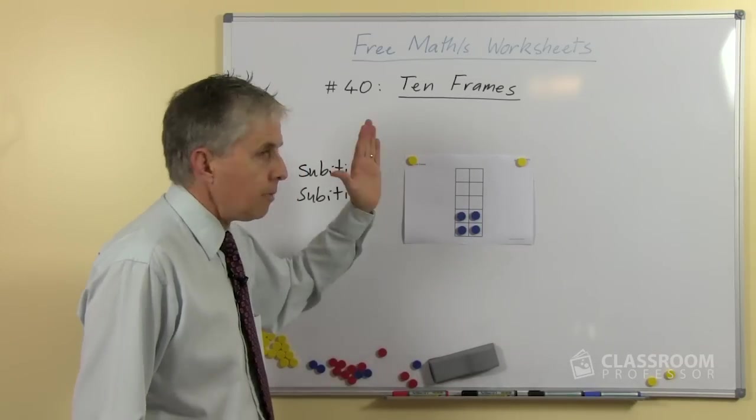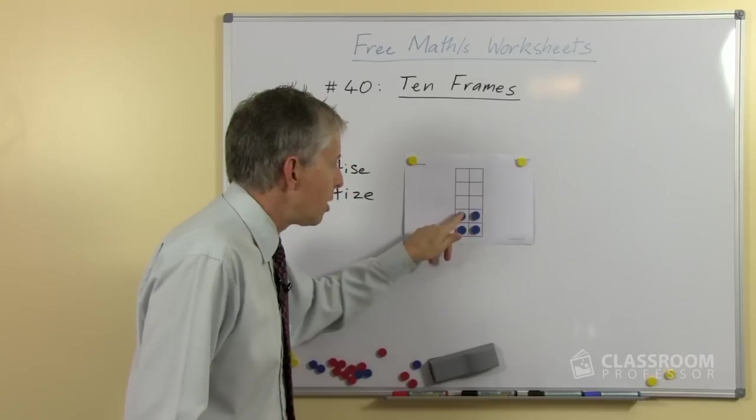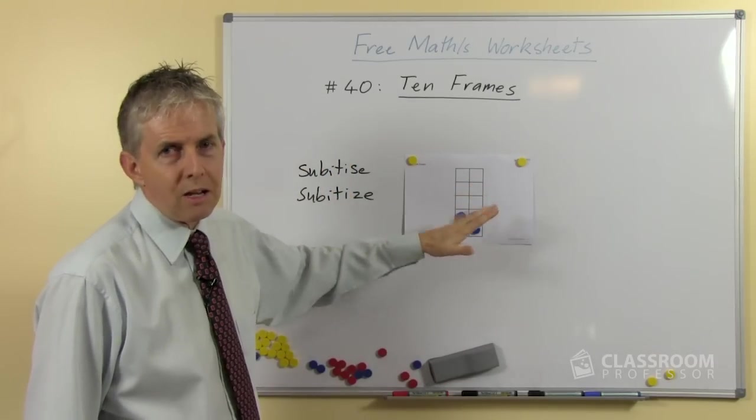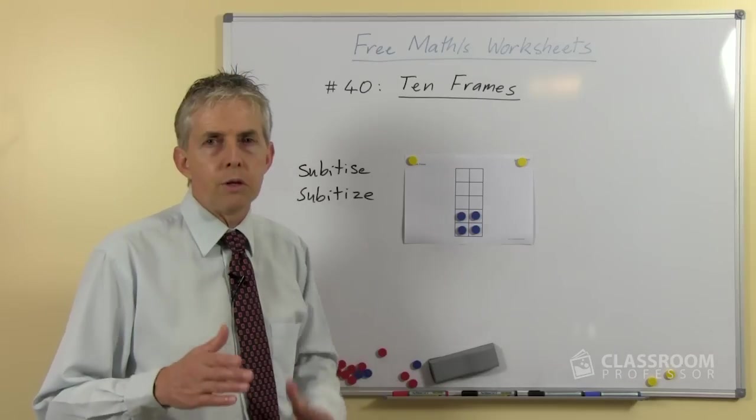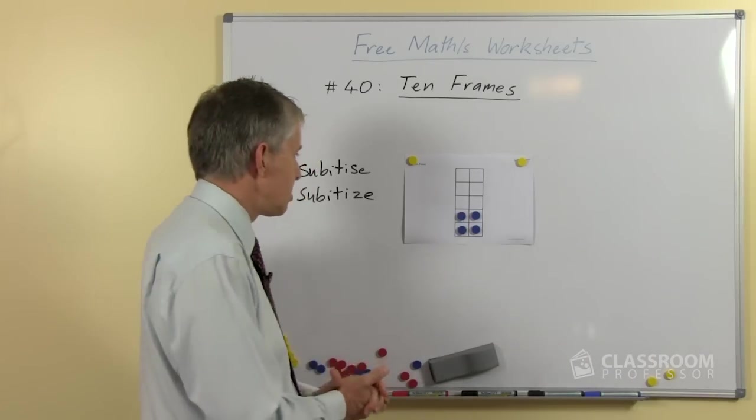So an adult can look at that easily and go that's four, you don't have to apply a numeral to each one and go one, two, three, four. If I put twenty of them on there you'd have to count them, unless they're in some ordered arrangement because there are too many. But with small numbers we can subitize.